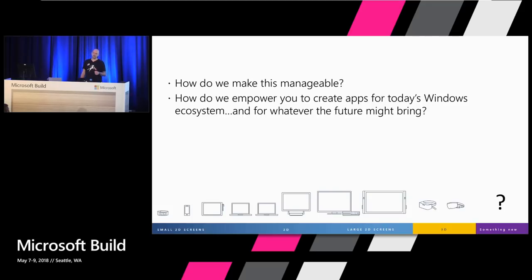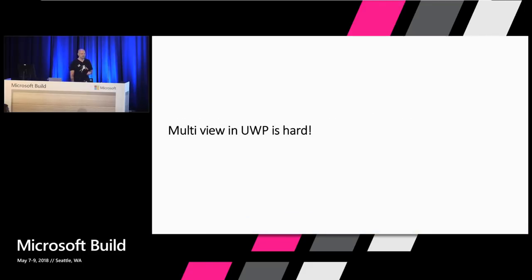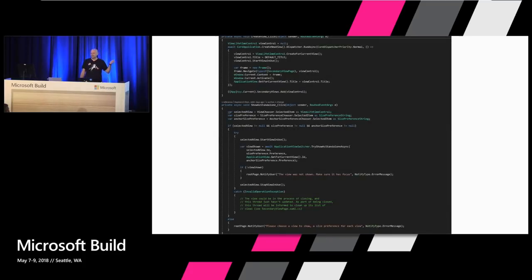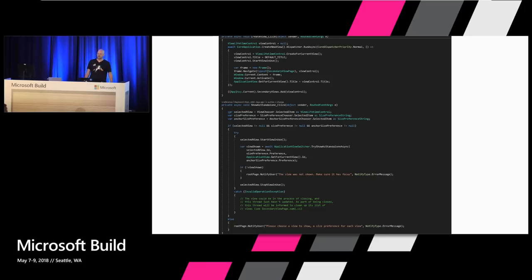So let's address the first big feedback we always hear when we talk about multiple windows in UWP: it's hard. And oh boy, do I get it. This is the basic boilerplate code for just getting another window on top of the screen, separate from the one you already had. And this is not all — there's a lot of helper functionality behind this, hundreds of lines of code just to make sure it doesn't fall over. And you have to have a full XAML page and frame in that window — basically, you can't do anything lightweight.